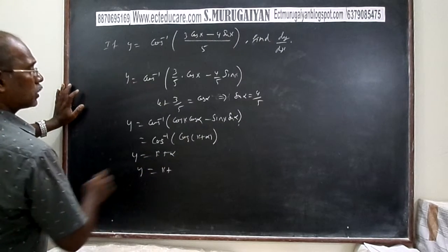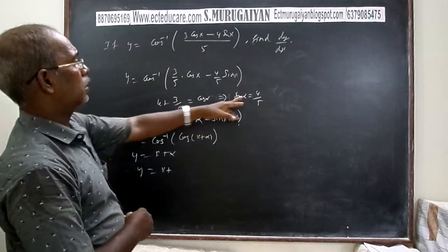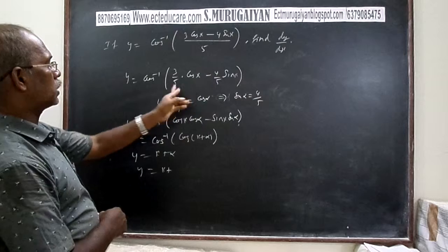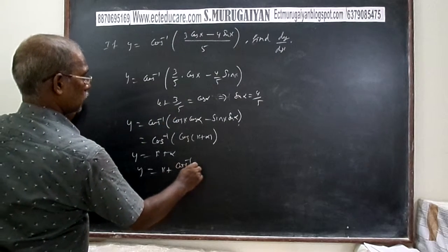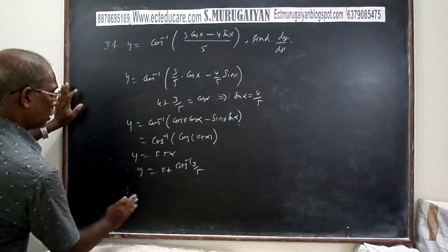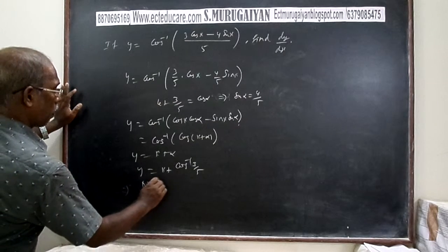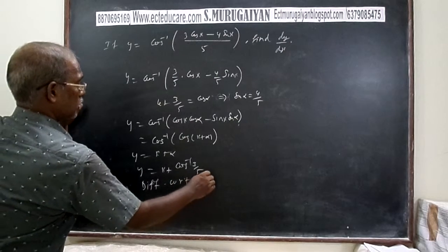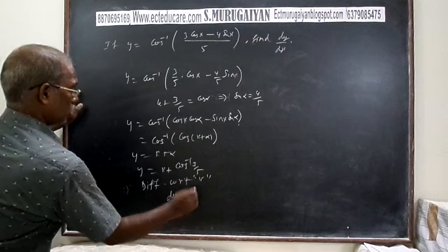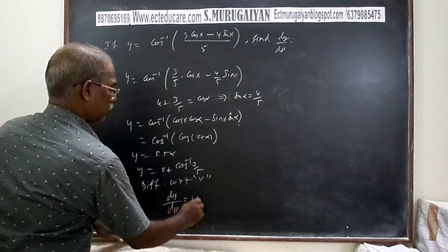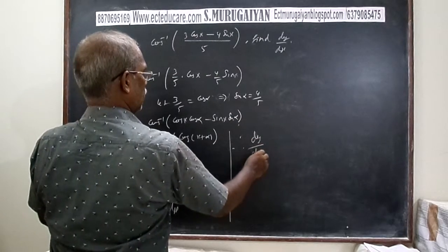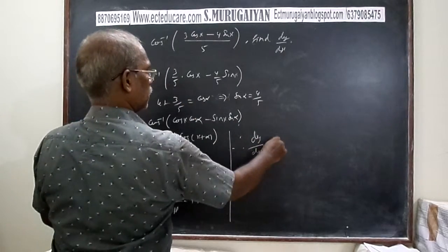So y = x + α, where α = sin⁻¹(4/5) or cos⁻¹(3/5), which is a constant. Differentiating with respect to x: dy/dx = 1 + 0 = 1.